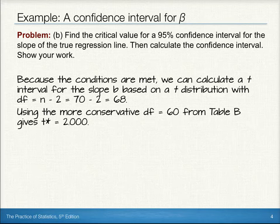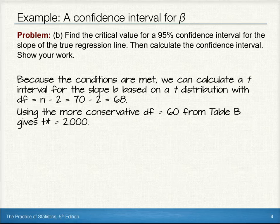Now, using the more conservative degrees of freedom of 60 from table B, we get a t-star critical value of 2.000.